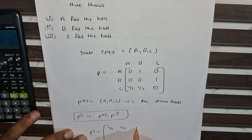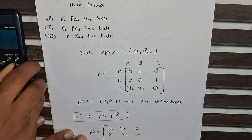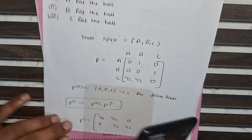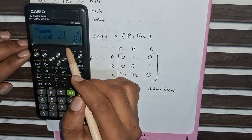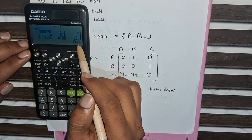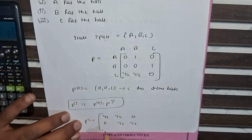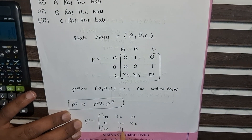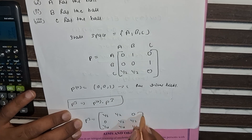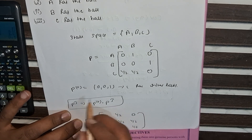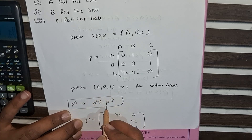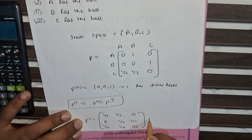The result of P³ from the calculator is: row 1 = 0.5, 0.5, 0; row 2 = 0.5, 0, 0.5; row 3 = 0.25, 0.25, 0.5. Converting to fractions: row 1 = 1/2, 1/2, 0; row 2 = 0, 1/2, 1/2; row 3 = 1/4, 1/4, 1/2.